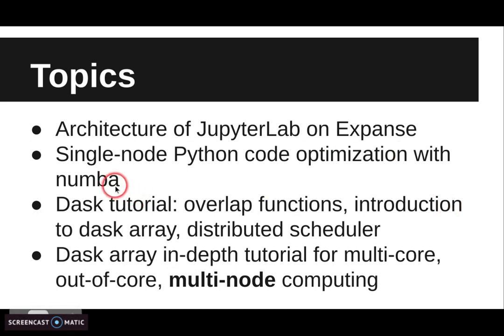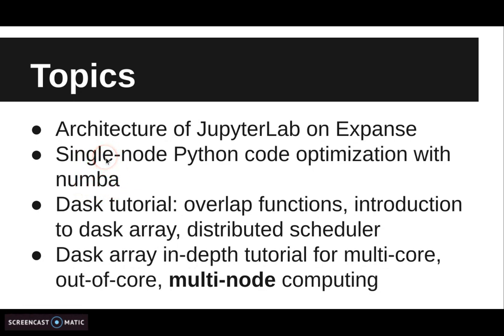I will introduce Numba, which is a just-in-time compiler for Python. It can compile Python code on the fly — you just write standard Python functions using NumPy and they are automatically optimized to machine code speed like C or Fortran. On top of that, it also supports automatic parallelization so that you can implement multiple threads and use all the cores in your machine.